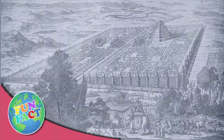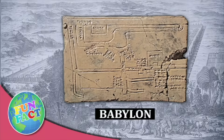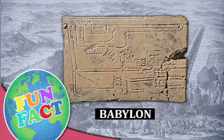The oldest known map in the world was made around 25,000 B.C. in a place called Babylon. We now call it Iraq. It was drawn on a clay tablet.